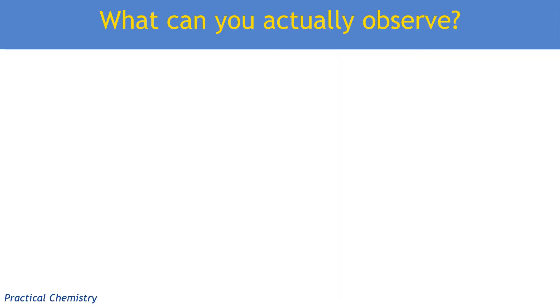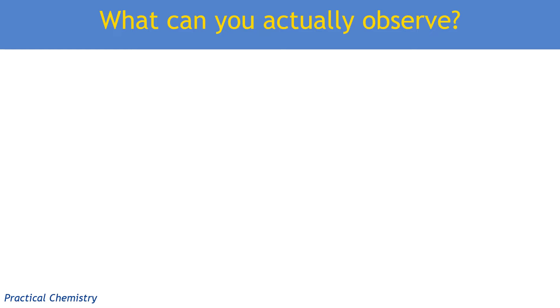The first thing we need to think about is what can you actually observe or see with your own eyes if a question is asking you about an observation. Most of the common observations that we make in chemistry experiments are related to changes of state and changes of colour.